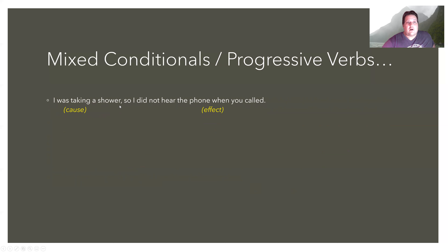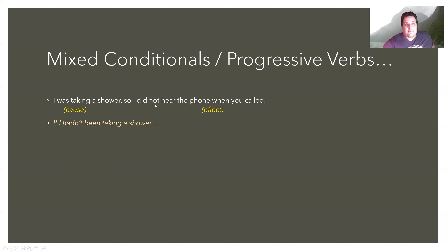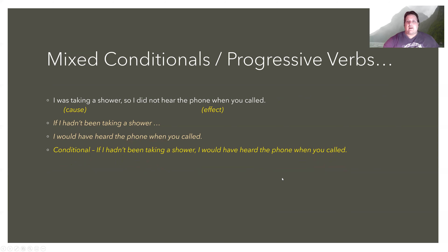'I was taking a shower, so I did not hear the phone when you called.' We have the past progressive as the cause, so the conditional changes it to the past perfect progressive with a negative: 'If I hadn't been taking a shower.' The result clause uses the third conditional because the effect is in the simple past: 'I would have heard the phone when you called.' The full conditional: 'If I hadn't been taking a shower, I would have heard the phone when you called.' We can also say: 'I would have heard the phone when you called if I hadn't been taking a shower.'